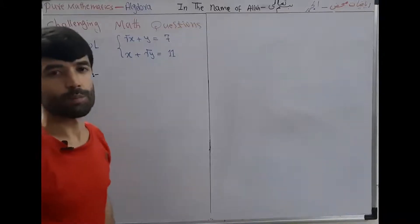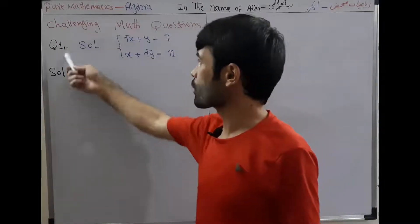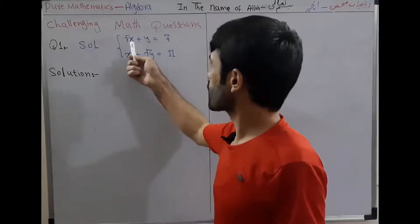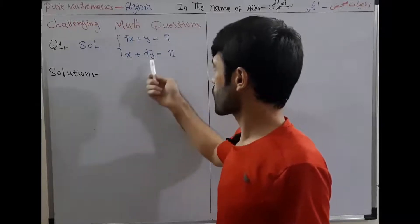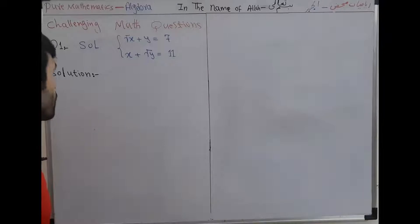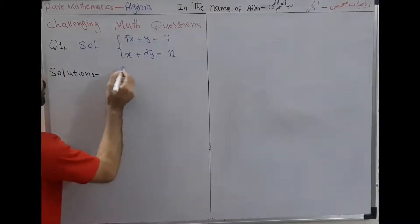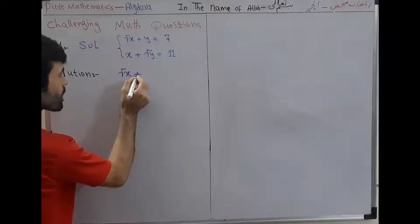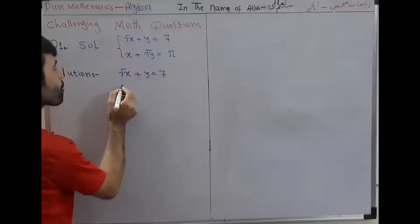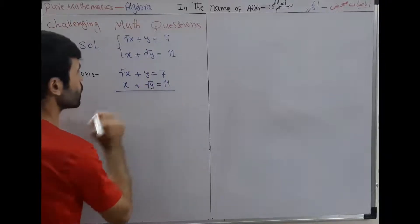Hello friend, welcome to the Pure Mathematics channel. It is challenging math question class. Question one: solve the system of equations — square root of x plus y is equal to 7, and x plus square root of y is equal to 11. We want to solve this question using algebraic methods.